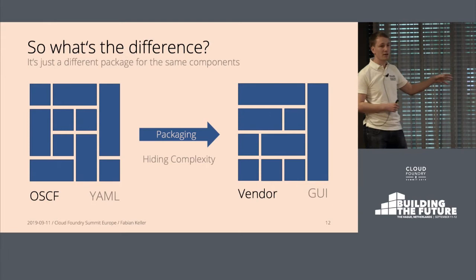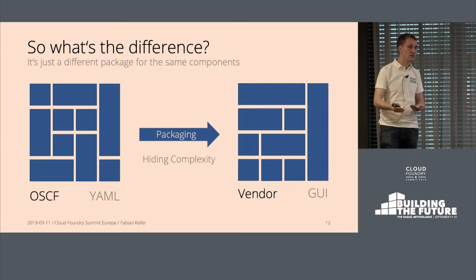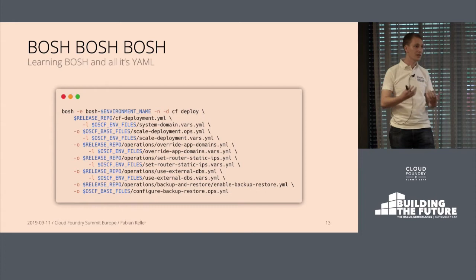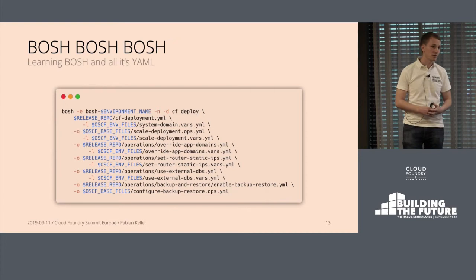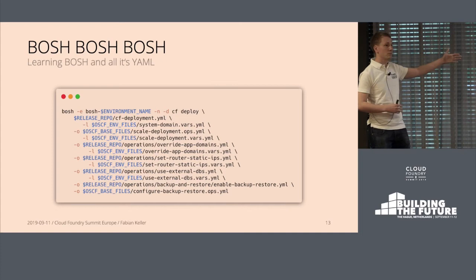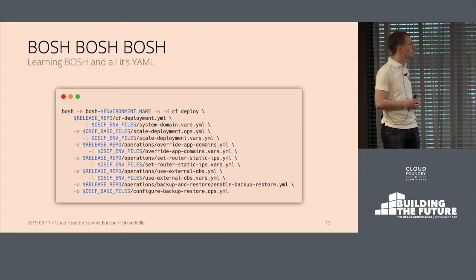In open source Cloud Foundry we have YAML-based packaging, whereas with a vendor distribution you typically have a user interface. What's really nice about the vendor is that it hides operational complexity — so that means we now have that complexity ourselves. The first thing for the whole team was to really dive deep and learn BOSH. BOSH is the central deployment component, and we wrote a lot of scripts for it — all the deployments were scripted in bash.